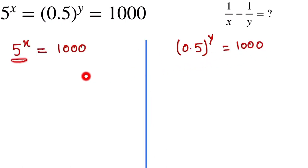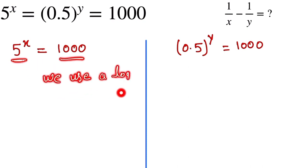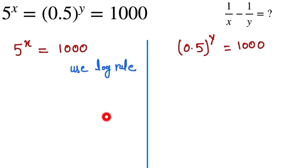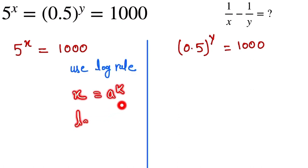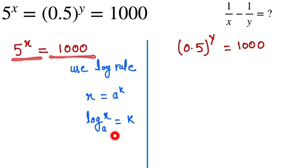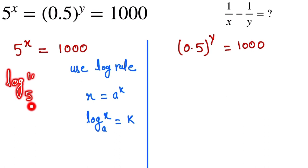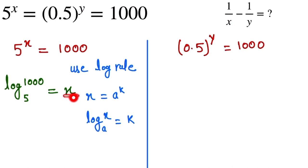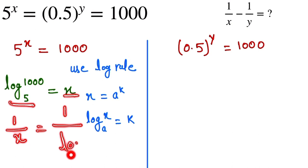Now we use a log rule. The rule states: if x equals a to the power k, then it can be written as log base a of x equals k. Applying this identity to our first equation, 5^x = 1000, we can write log base 5 of 1000 equals x.